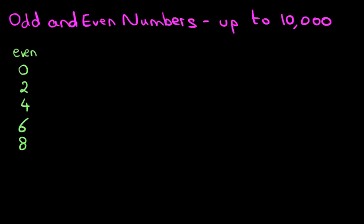How about the odd numbers? What do they begin with? They begin with one and then we simply count in twos. Three, five, seven, nine. So, those are our odd and even numbers.